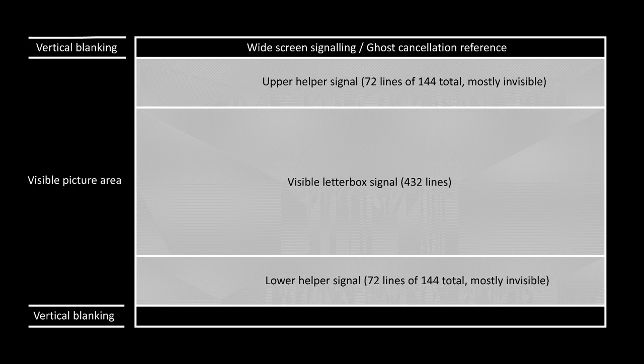We'll talk a bit more about those later on. Next up we have the first half of the helper: 144 lines of invisible signal containing the information that was stripped out to create the visible letterboxed image. Then we have the active signal — 432 lines of regular video containing the letterboxed image — and then the other half of the helper. If we add 432 and 144 together we get 576, the number of visible lines in a PAL video signal. If we divide 576 by 4 we get 144, and that gives us the first clue as to how this technology works.